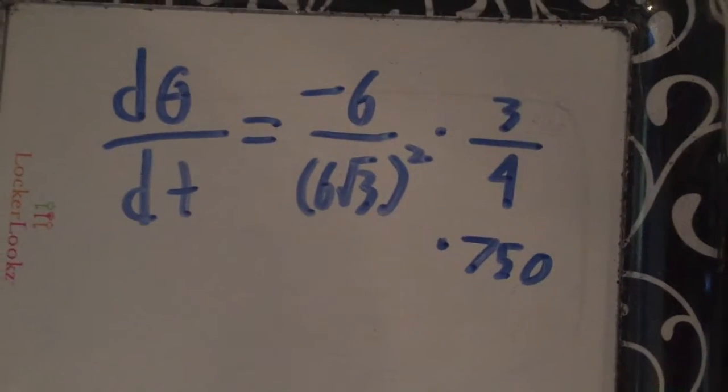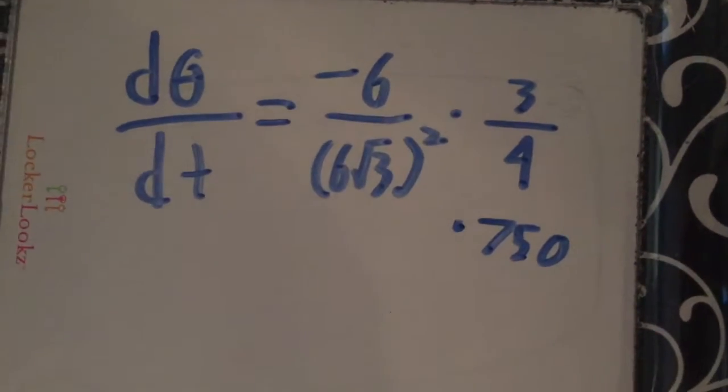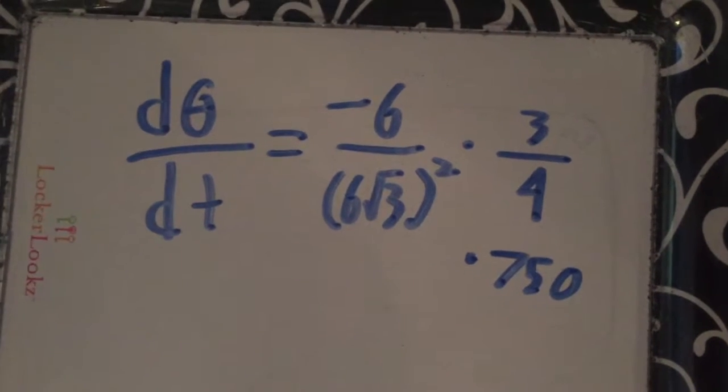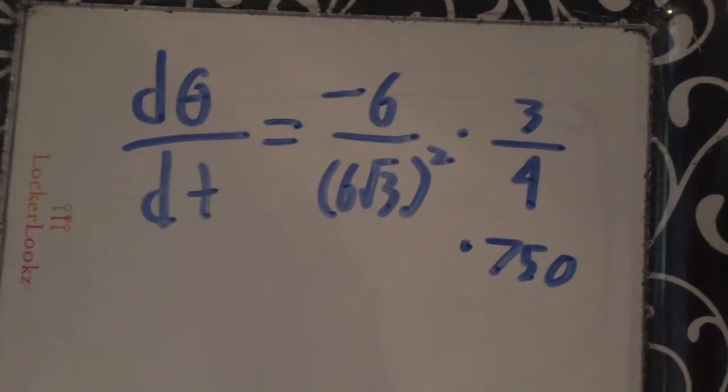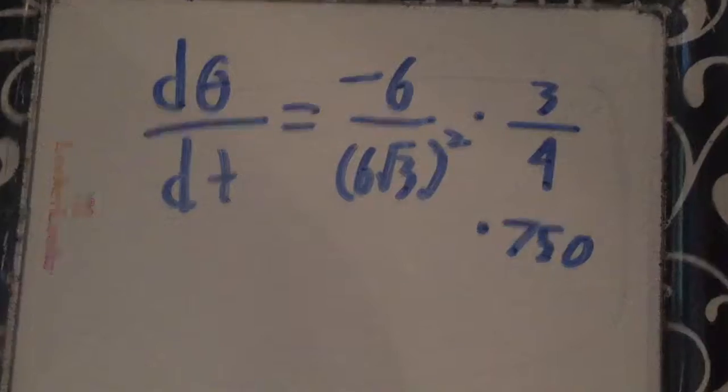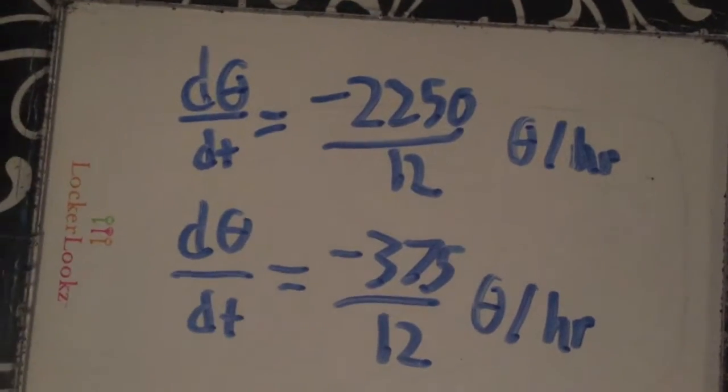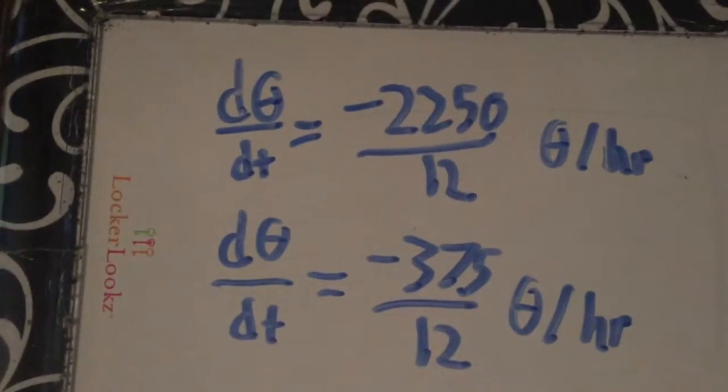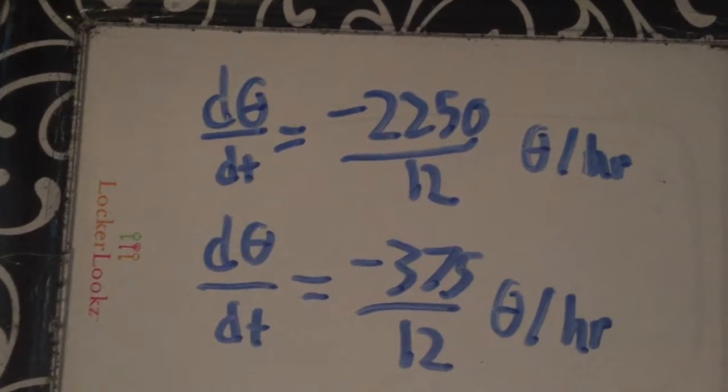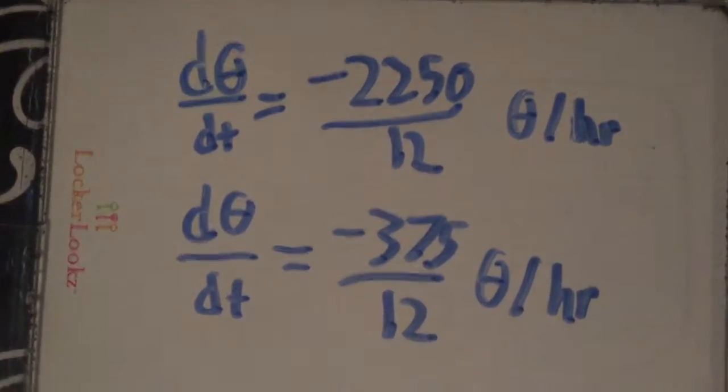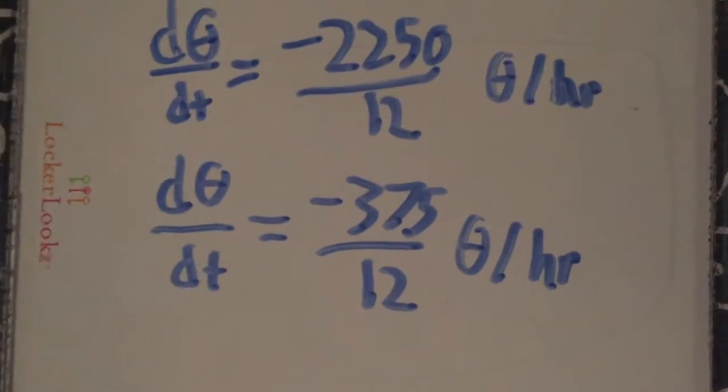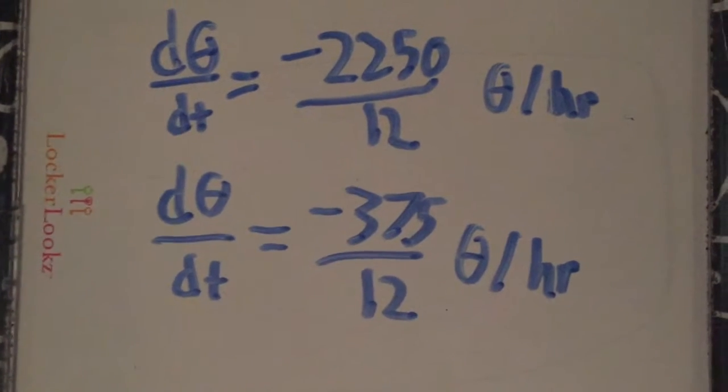Now that everything is simplified we can plug in the value of x we found earlier, 6 times the square root of 3, into the equation for x. Everything is multiplied. Our final answer is negative 2250 over 12 radians per hour which can be reduced to negative 375 divided by 12.